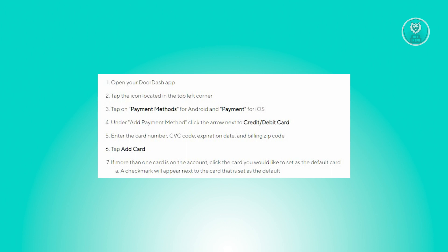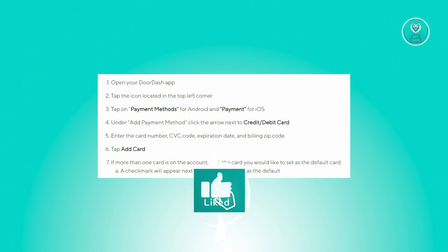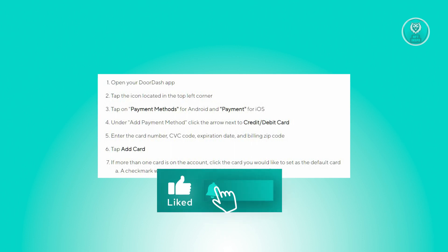Now for Android users, proceed by selecting Payment Methods. And for iOS users, tap the Payment option. Next, you'll find the option that says Add Payment Method. Click on the arrow adjacent to the credit and/or debit card to expand the options.